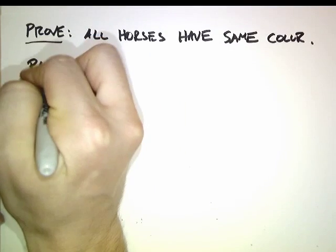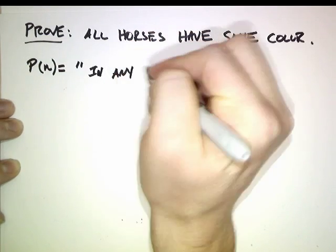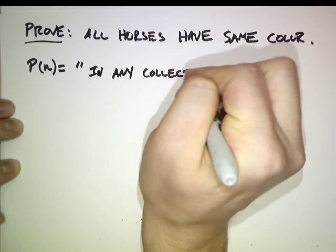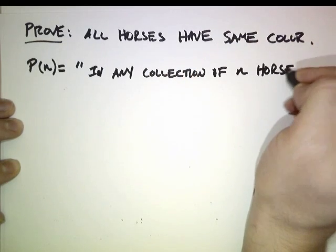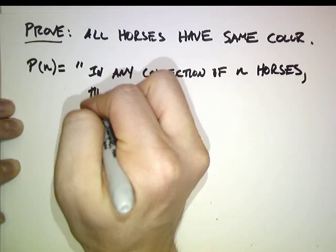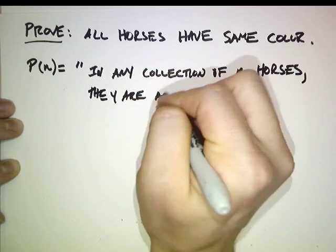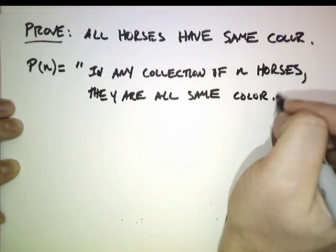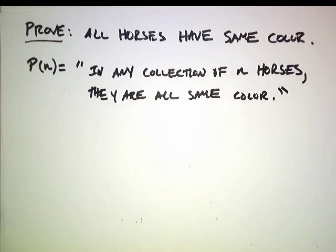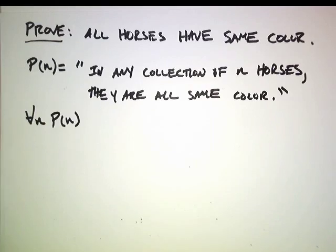P(n) is going to be: in any collection of n horses, they are all the same color. I'm going to prove that for all n, P(n) is true.